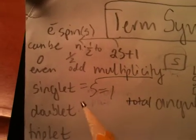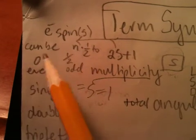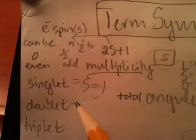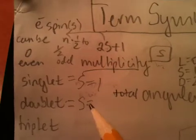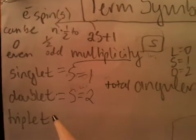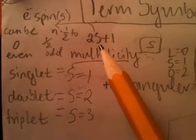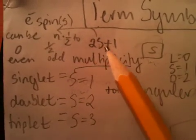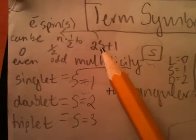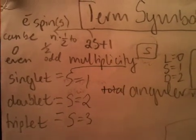Now, if you had a doublet, then that means you have spin of 1 half, electron spin of 1 half. This gives you an s of 2, multiplicity of 2, and then likewise, multiplicity of 3 if you have an s spin of 1.